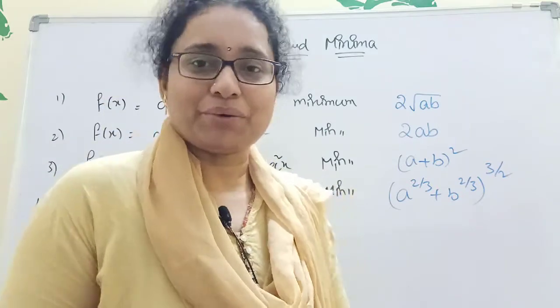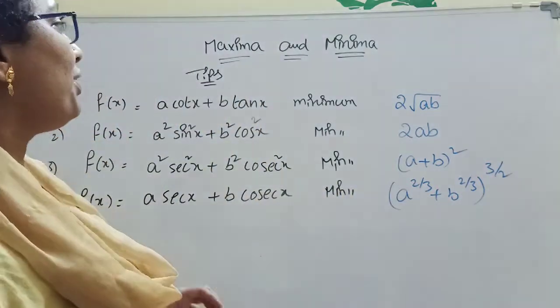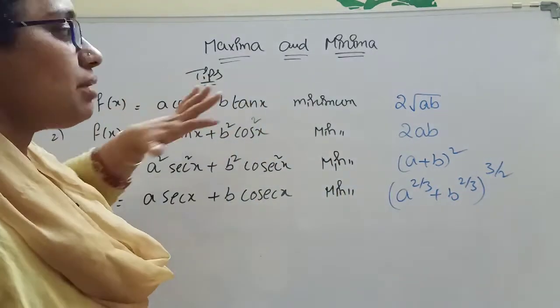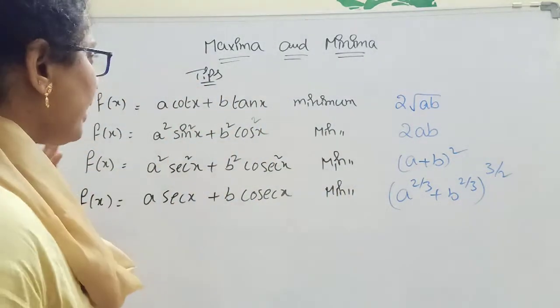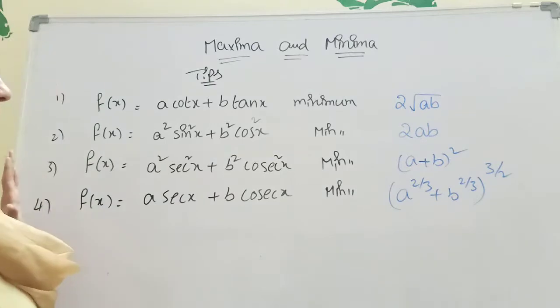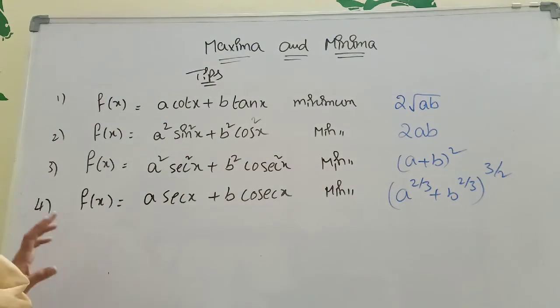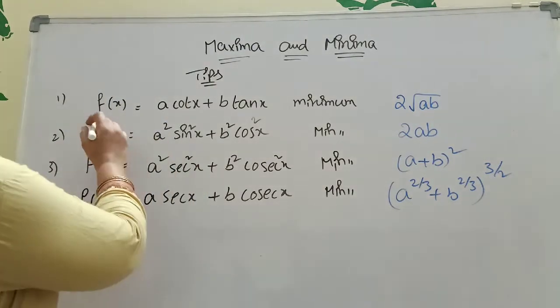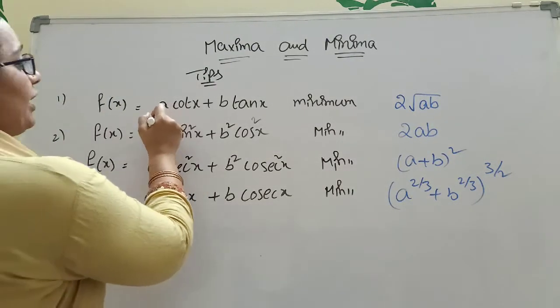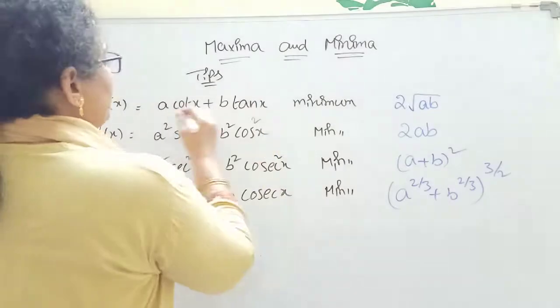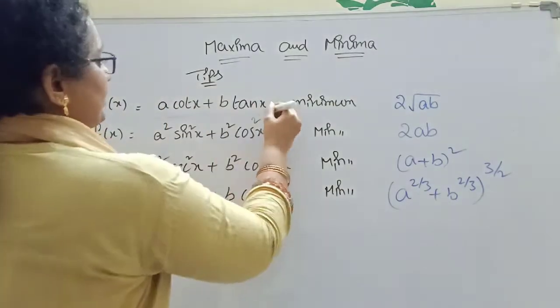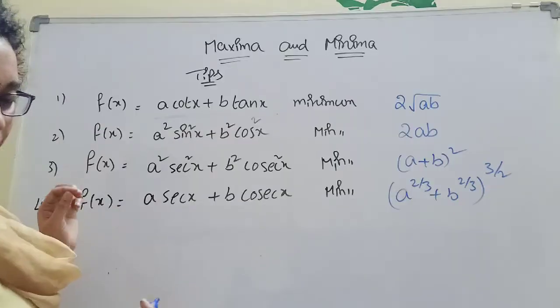Today we are discussing Maximum Minima. In this Maximum Minima topic, listen carefully — some tips are there. The first one: f(x) = A·cot(x) + B·tan(x).